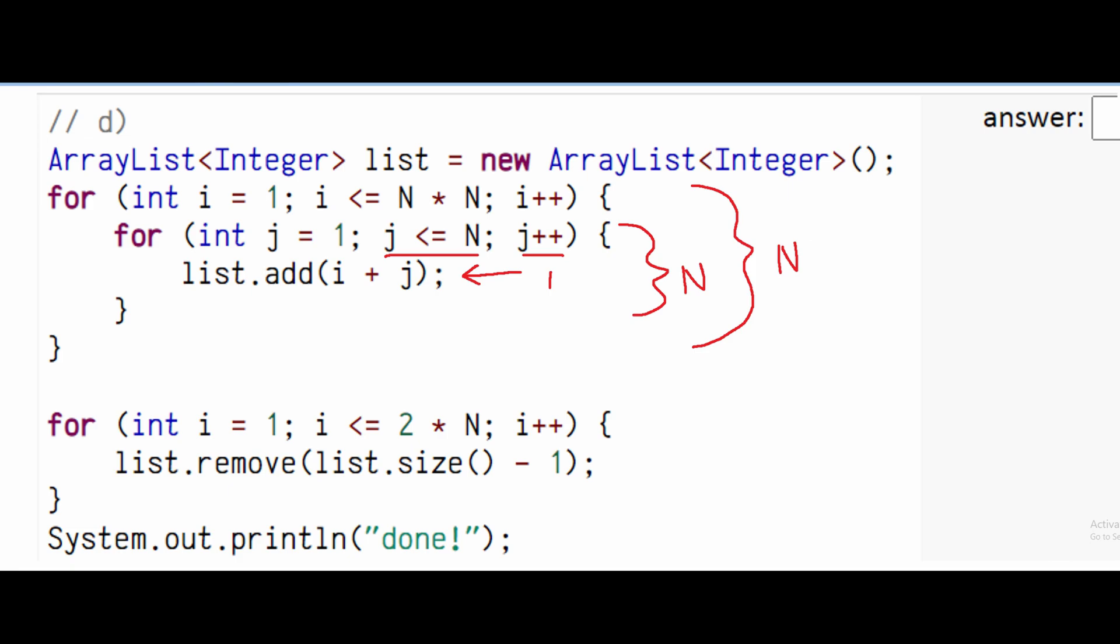And our outer for loop is going to be executed n squared because we have an n times n right here, which is going to equal n squared times our inside n. So that means we have n cubed right here.